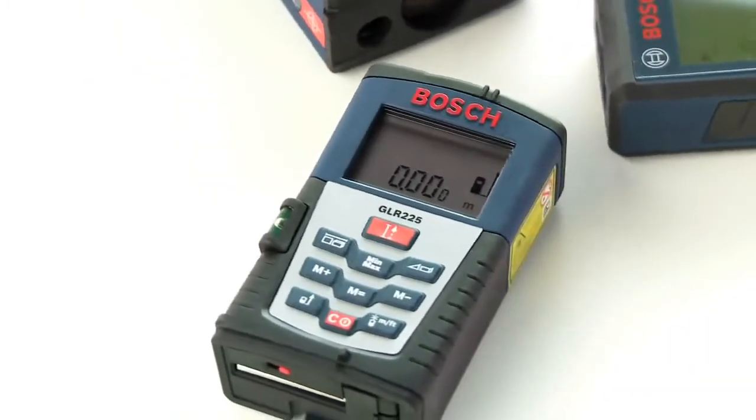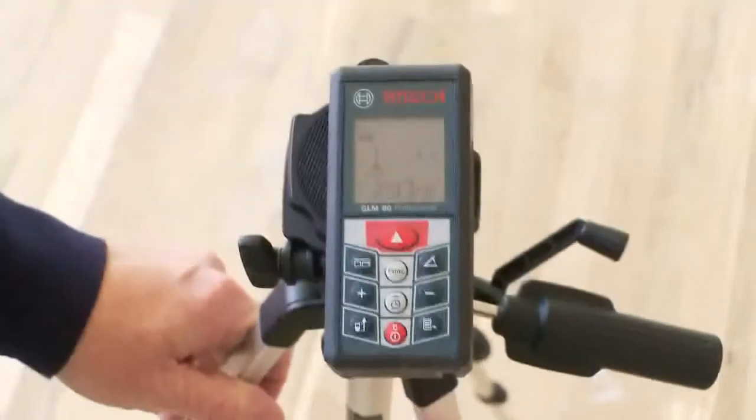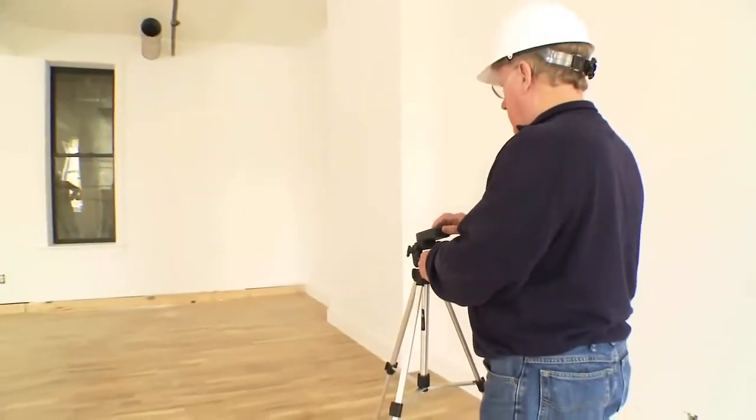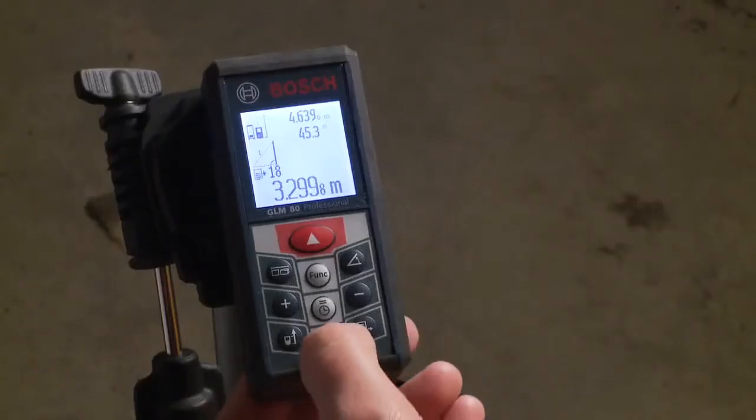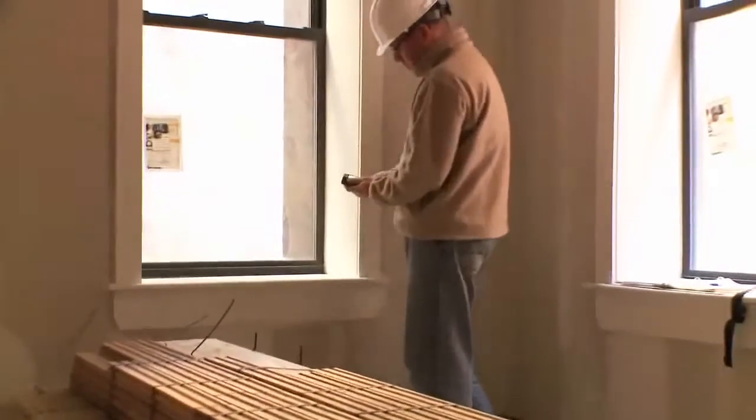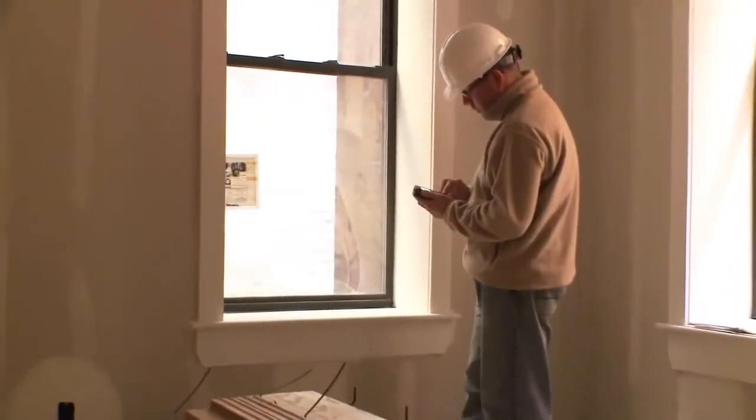As with all Bosch Laser Measurers, the GLM-80 has a full function keypad for calculating length, area, and volume. It also has memory for storing measurements and is able to change the dimension display between feet, inches, and metric.